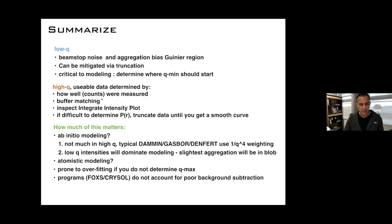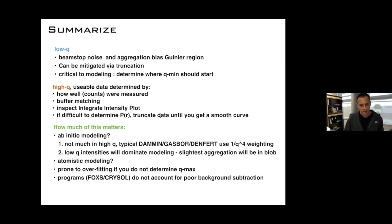One way to look at high-q quality is to inspect the integrated intensity plot. Also, when determining the P(r) distribution, if you're having a lot of difficulties and have to truncate data, that's informing you that your high-q data is corrupting the analysis and you should probably exclude it.